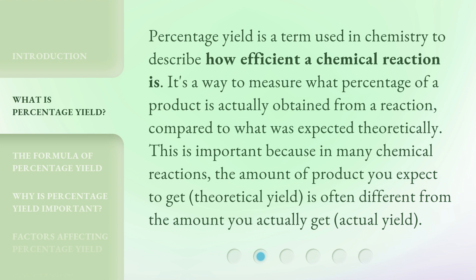This is important because in many chemical reactions, the amount of product you expect to get (theoretical yield) is often different from the amount you actually get (actual yield).